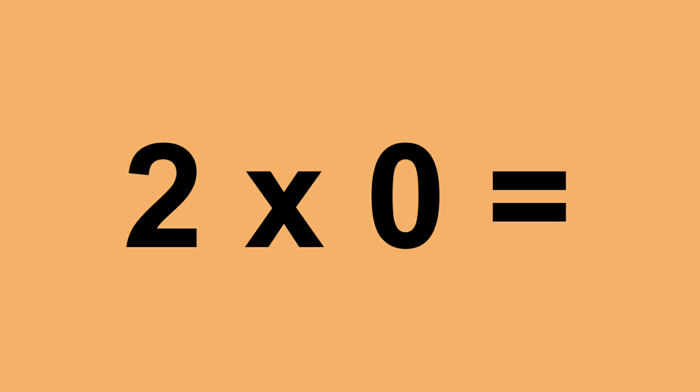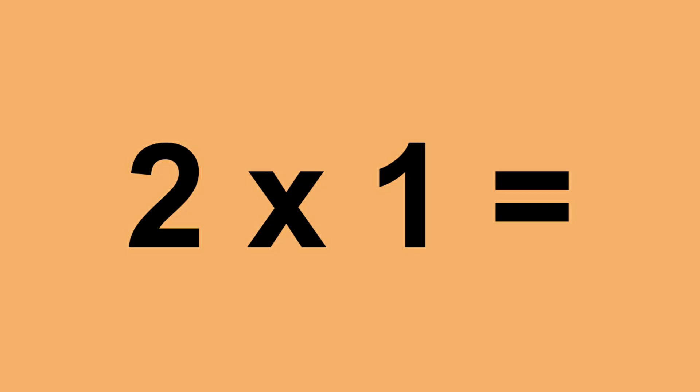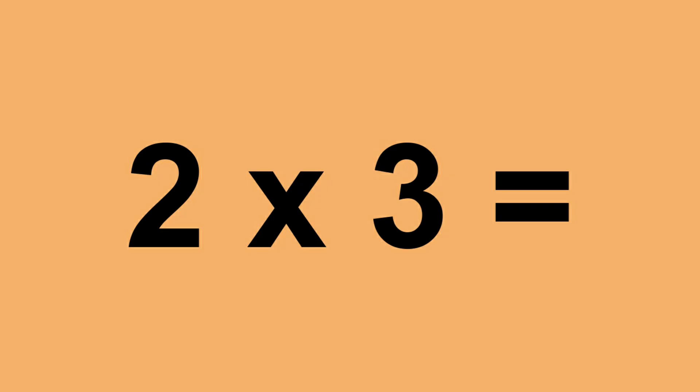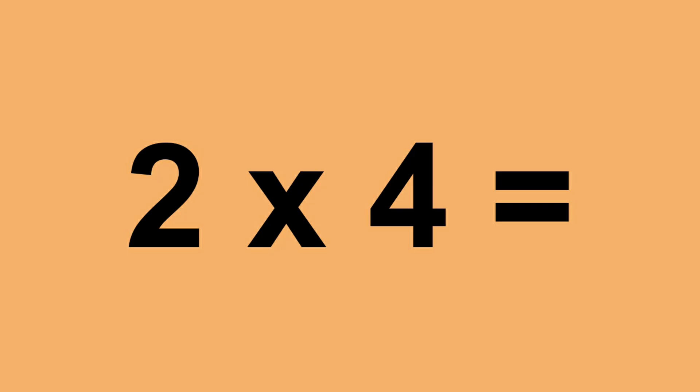2 times 0 equals 0. 2 times 1 equals 2. 2 times 2 equals 4. 2 times 3 equals 6. 2 times 4 equals 8.